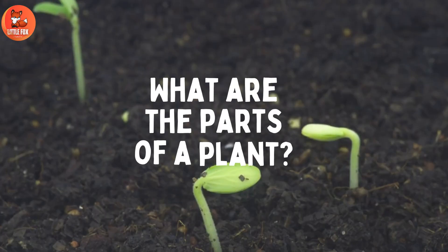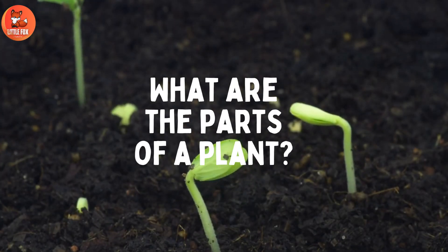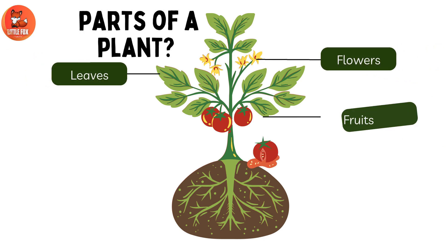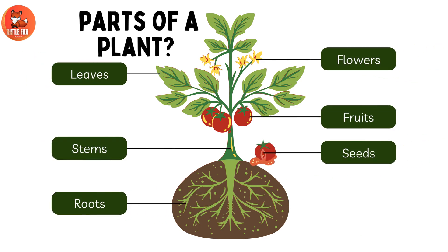What are the parts of a plant? Seeds. Roots. Stems. Leaves. Flowers and fruits.